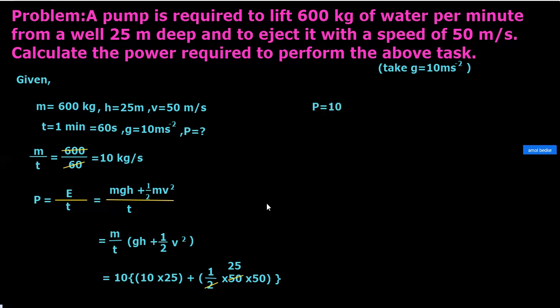Now power P is equal to 10 as it is, 10 into (10 × 25 = 250) plus 25 × 50 finished, means 25 × 50 you have, so 25 × 50 is 1250.